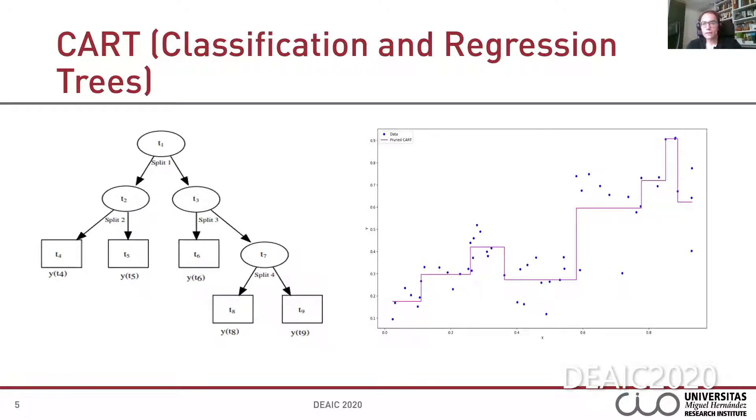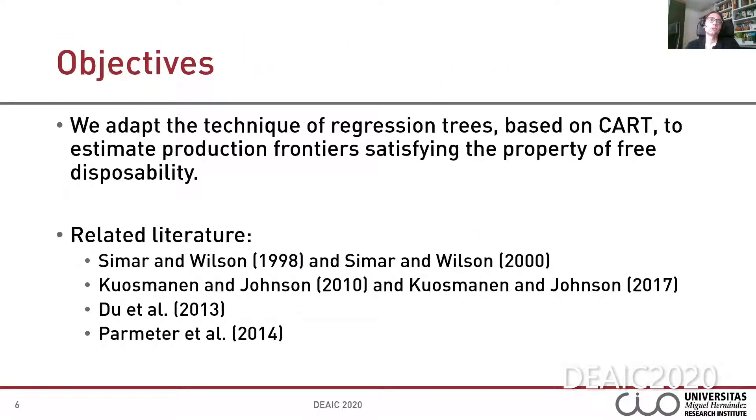Obviously, CART was not designed by Breiman for dealing with estimation of production functions in microeconomics. However, note that both approaches, FDH and CART, generate step functions as predictor. This is an important point. Well, in this paper, we adapt the technique of regression trees, based on CART, to estimate production frontiers satisfying the property of free disposability.